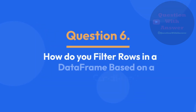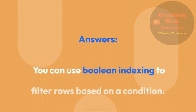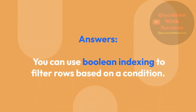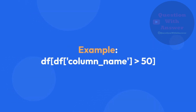Question 6: How do you filter rows in a DataFrame based on a condition? You can use Boolean indexing to filter rows based on a condition. This is the example of how you can filter rows in a DataFrame based on a condition.